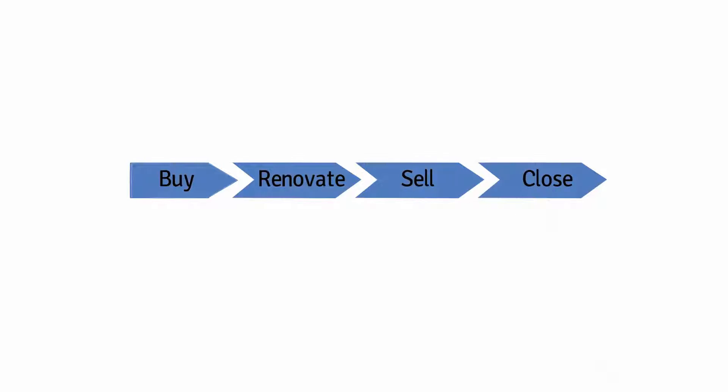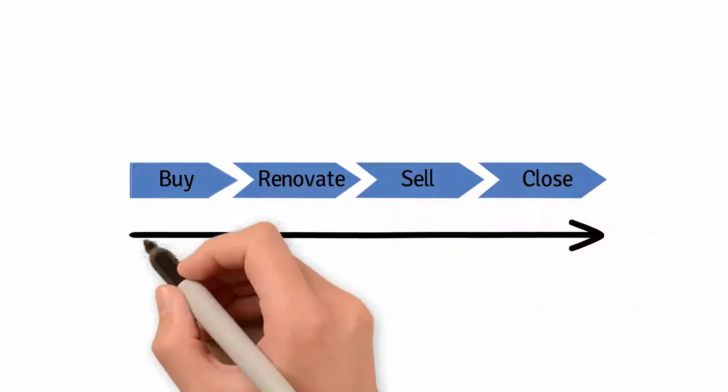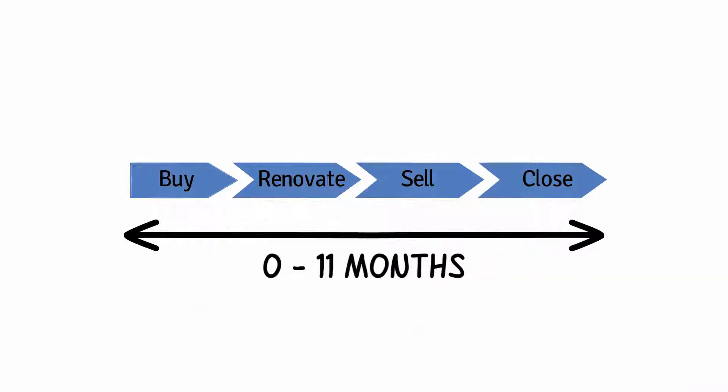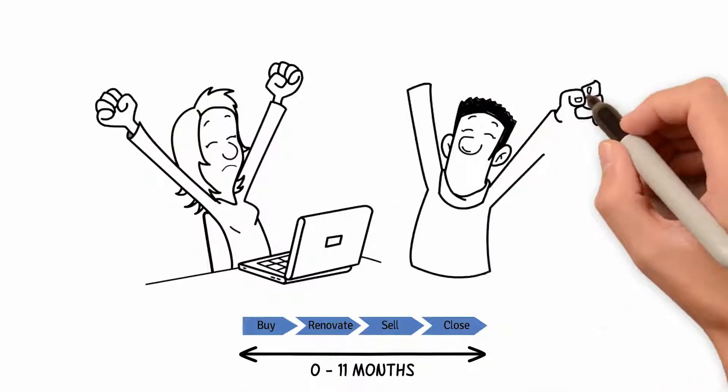Buy, renovate, sell, close. The old process takes upwards of 11 months to complete and cash out. Yay, money!